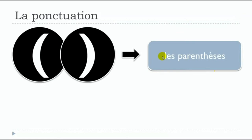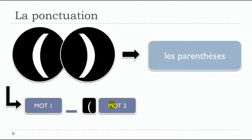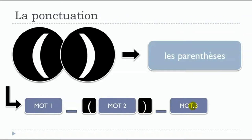Les parenthèses — parentheses — work like this: your first word, then a space, then the opening parenthesis, your word or group of words inside, then the closing parenthesis, then a space, and the next part follows. So before the opening parenthesis: one space. Between the parenthesis and its content: nothing. After the closing parenthesis: one space.